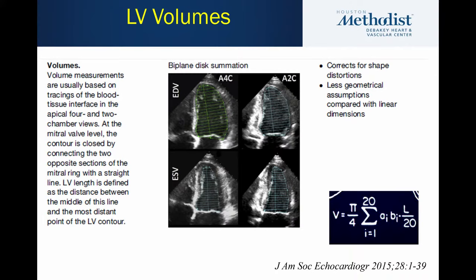The ASE guidelines recommend the method of multiple discs, a modification of Simpson's rule, where you trace the cavity of the LV. If you do biplane, you use both two-chamber and four-chamber views, using the long axis as a reference with the longest long axis of the two. Each disc has its volume calculated individually using a simple formula, and then all volumes are summed together. By hand this would take all day, but computers can do this in seconds. You can trace the cavity and get this information very nicely.